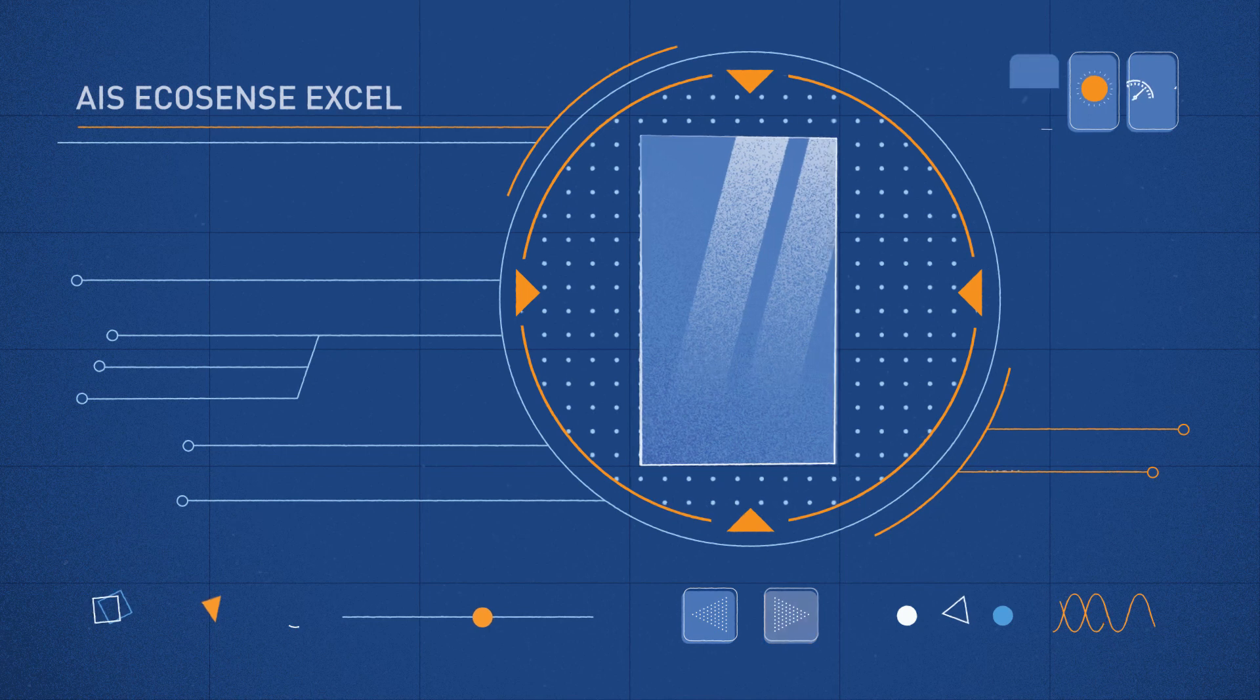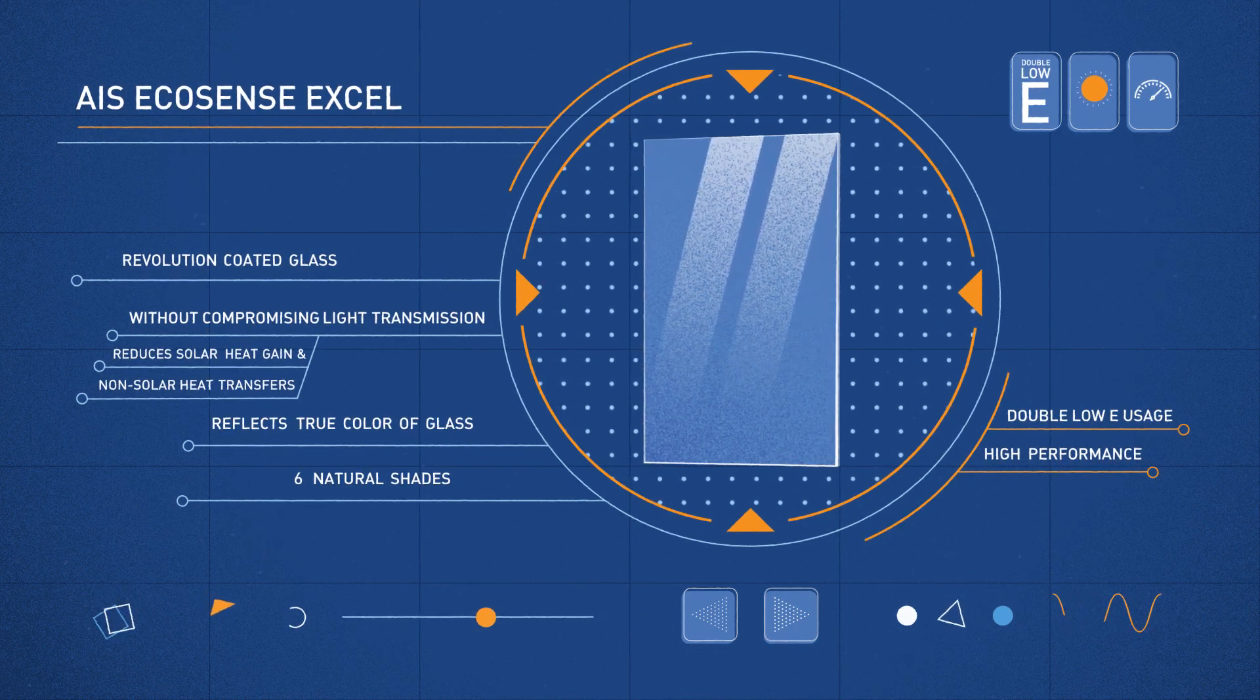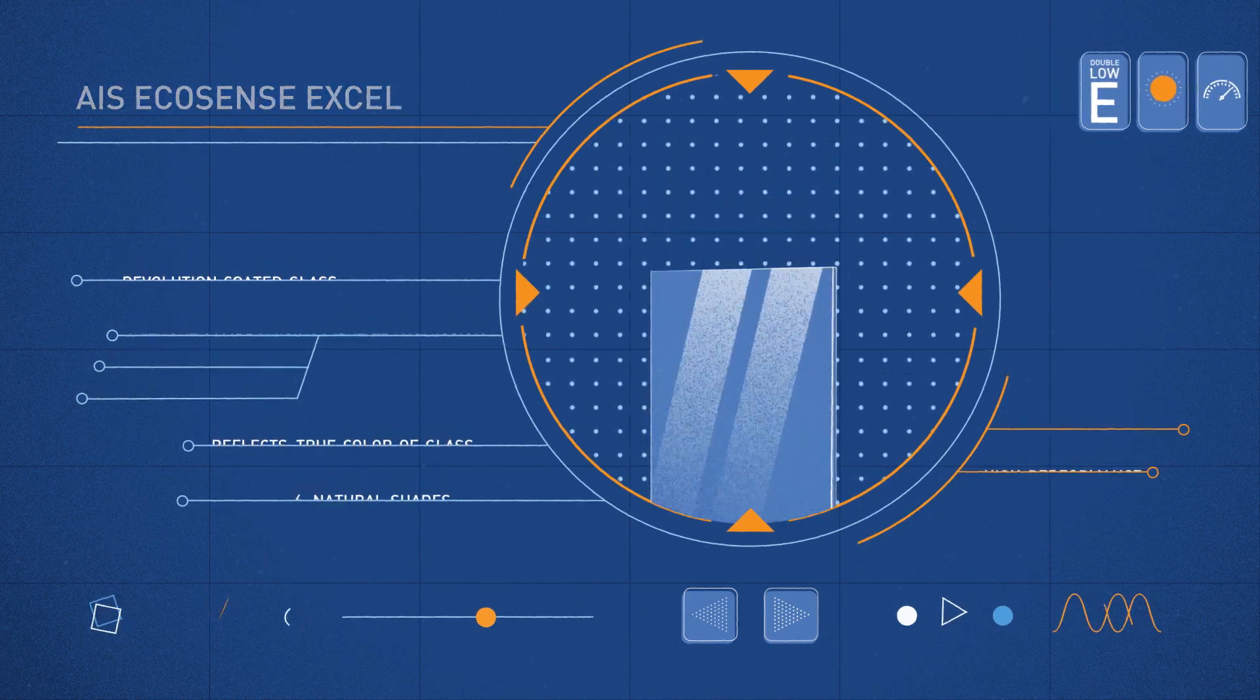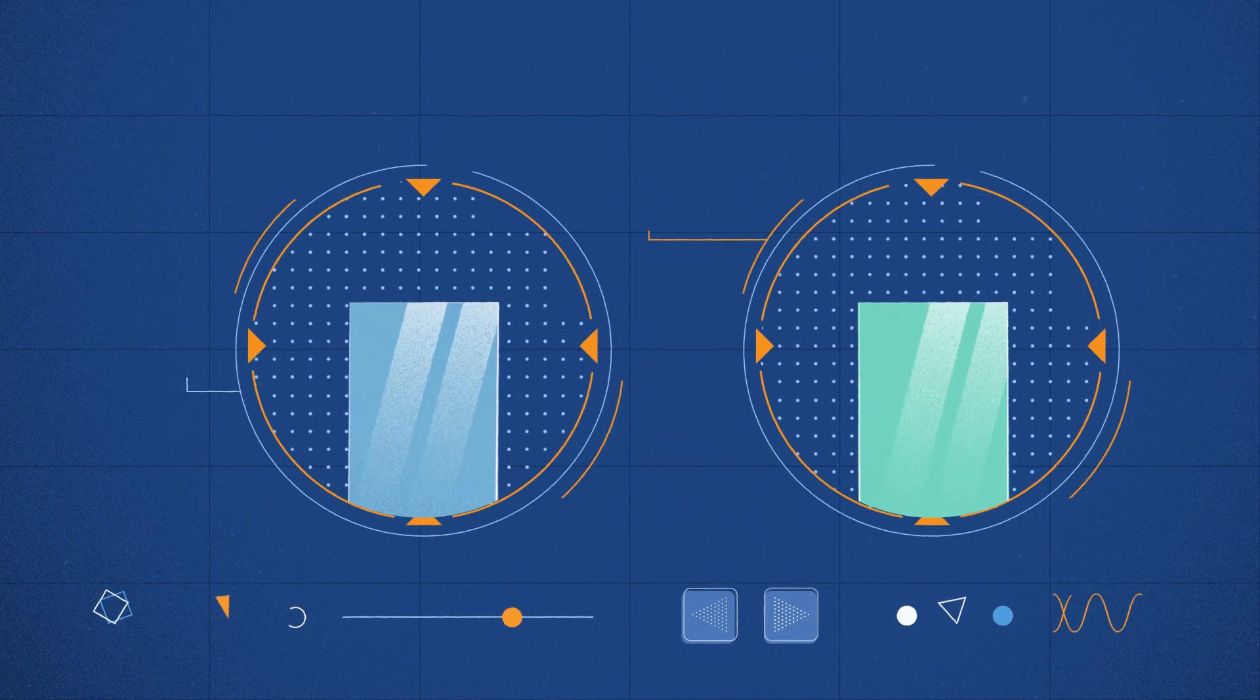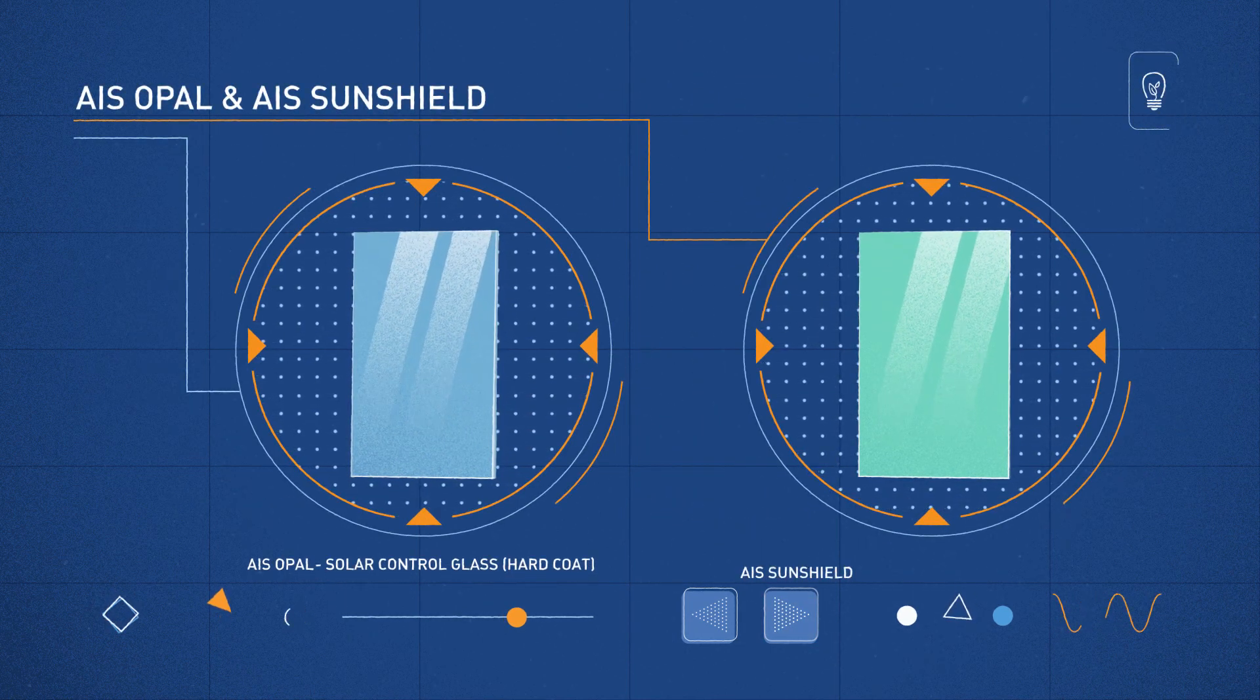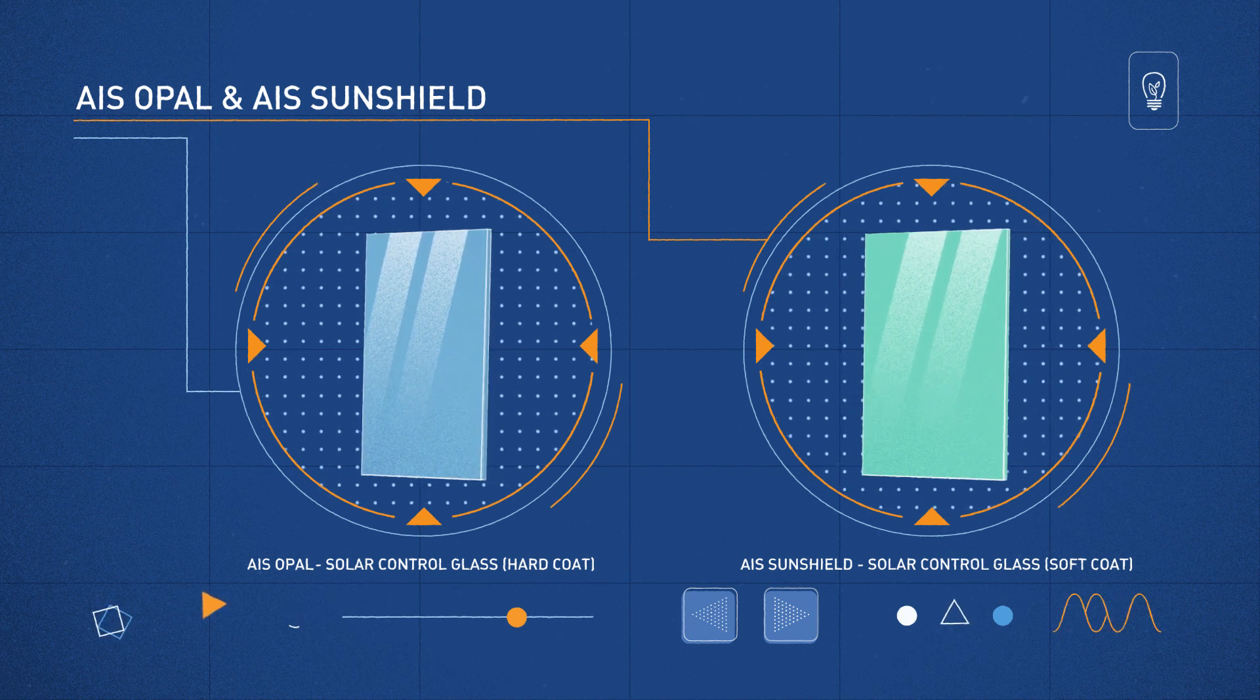EcoSense Excel, a double low-e high-performance glass. We also offer AIS Opal, an AIS SunShield glass range under energy efficiency solutions.